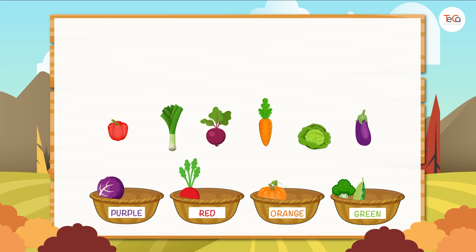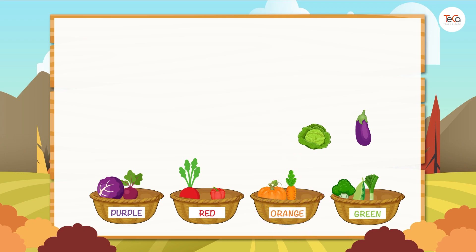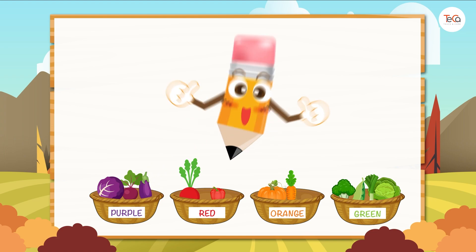A bell pepper — put it into the red group. A leek — put it into the green group. A beet — put it into the purple group. A carrot — put it into the orange group. A cabbage — put it into the green group. An eggplant — put it into the purple group. It's done!